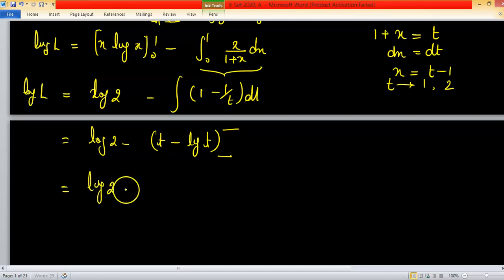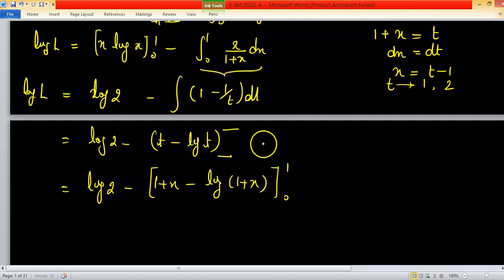This one equals to log 2 minus t is 1 plus x minus log 1 plus x. Now, this is expression in terms of x so you can use limit of x instead of limit of t. And after putting lower and upper limit what we have log 2 minus 2 plus log 2 plus 1.